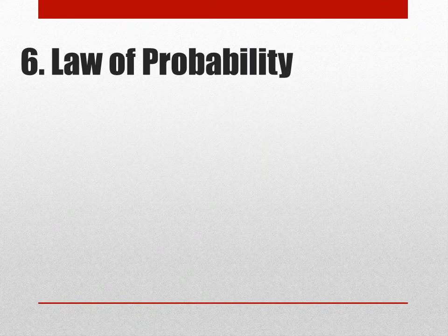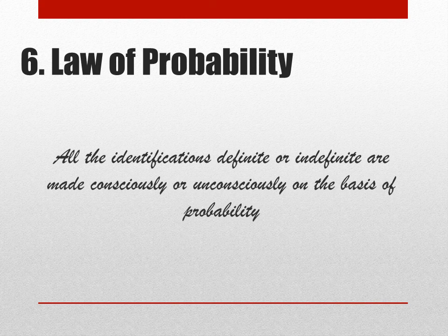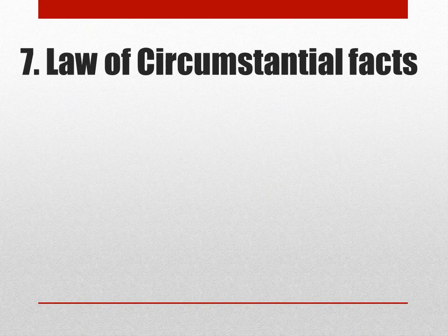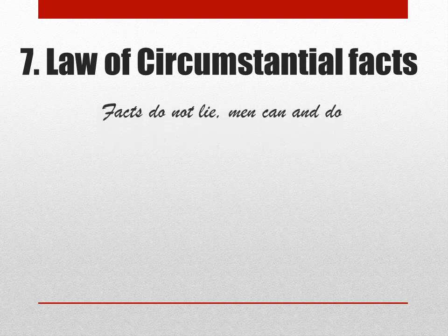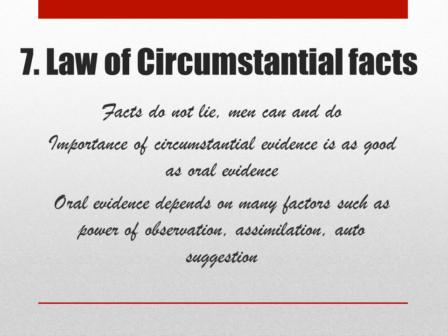The sixth principle is the Law of Probability. All identifications, definite or indefinite, are made consciously or unconsciously on the basis of probability. The seventh and last law is the Law of Circumstantial Facts. Facts do not lie — men can and do. The importance of circumstantial evidence is as good as oral evidence. Oral evidence depends on many factors such as power of observation, assimilation, autosuggestion, etc.